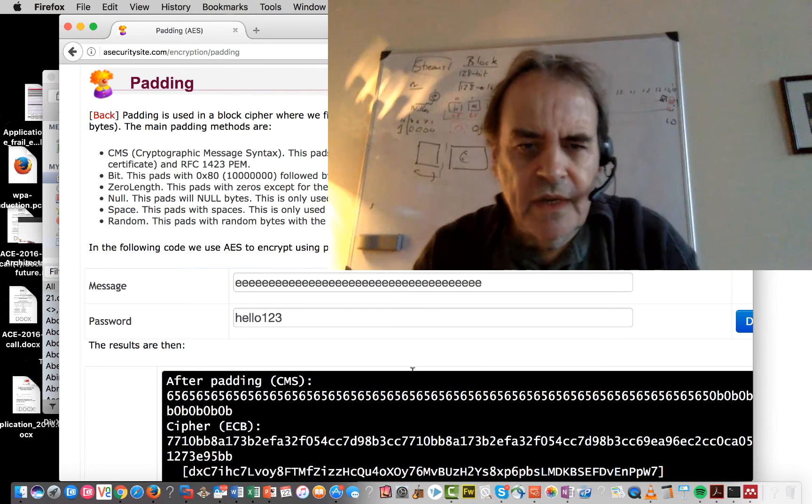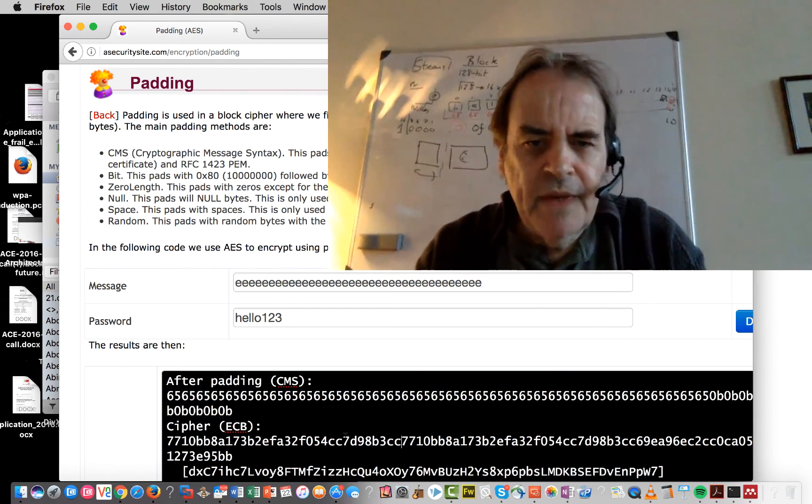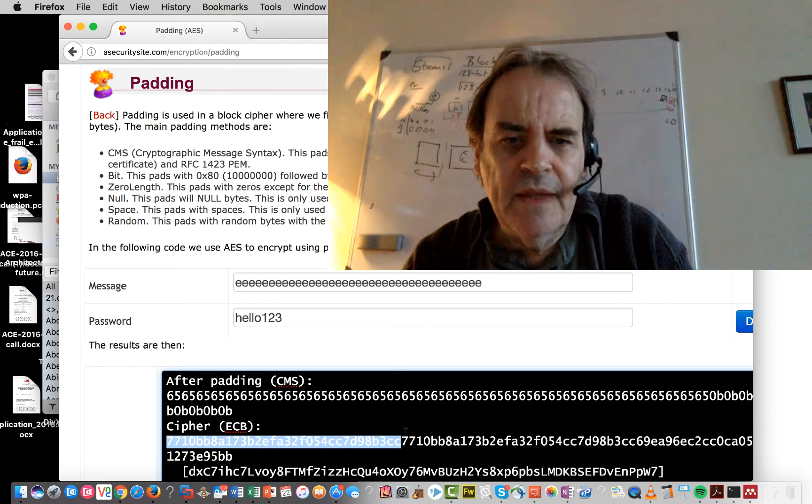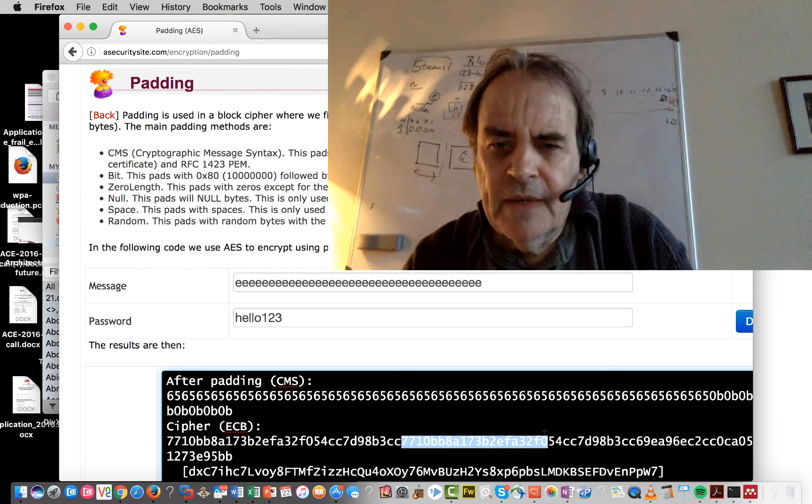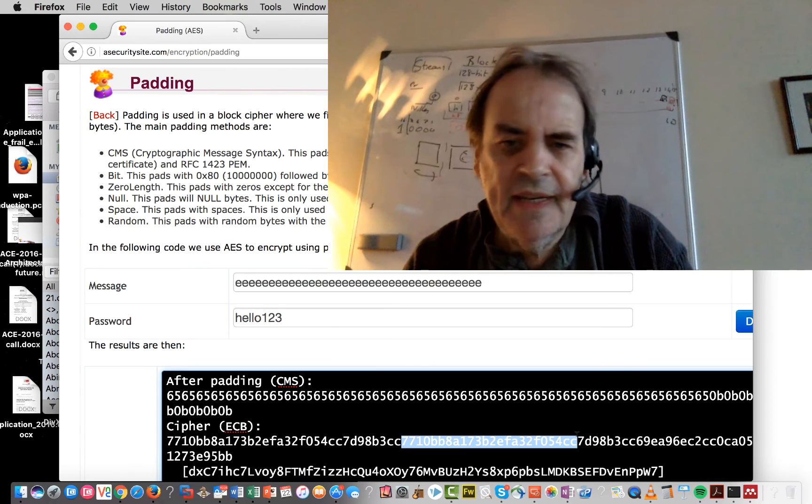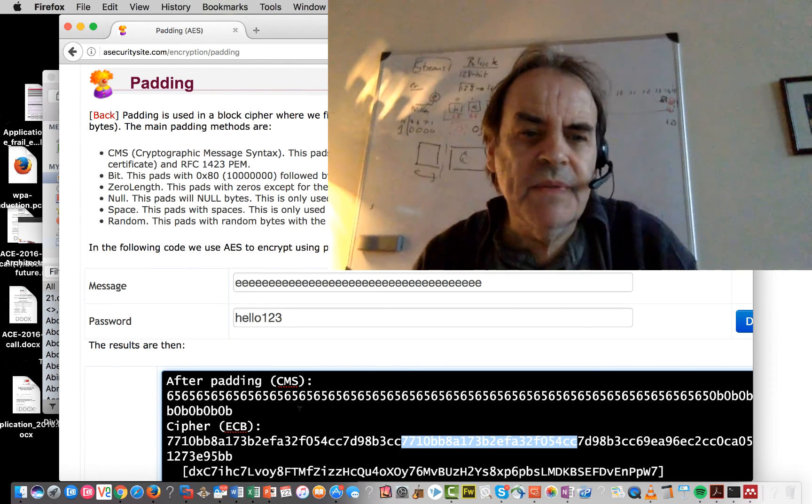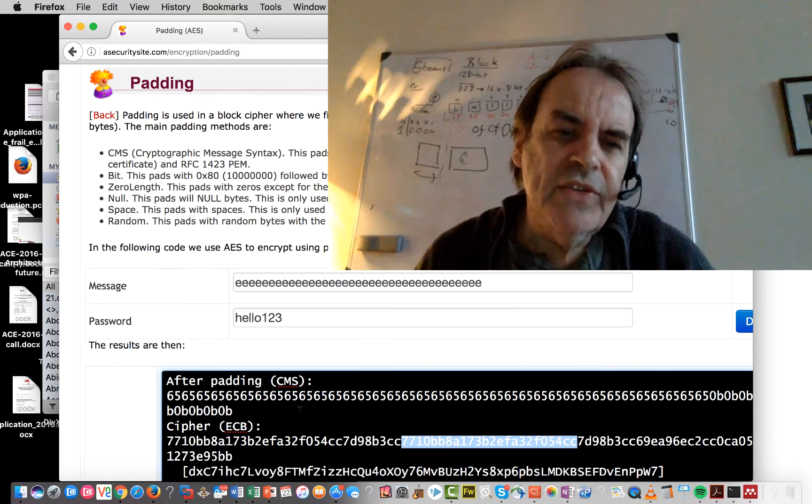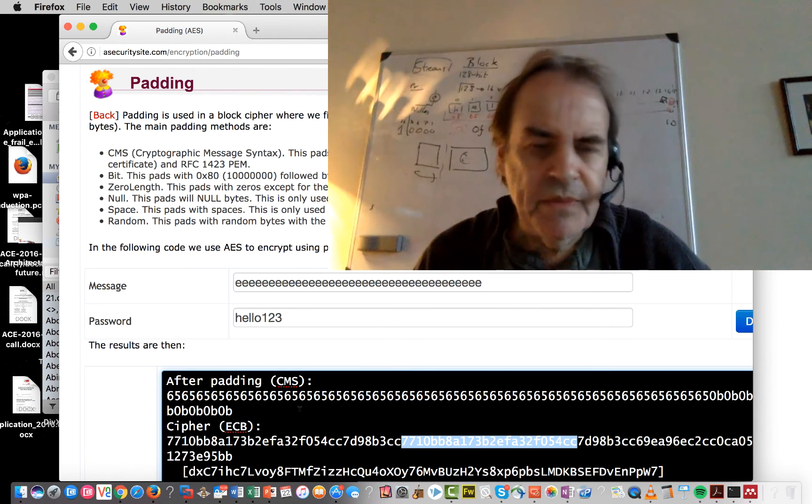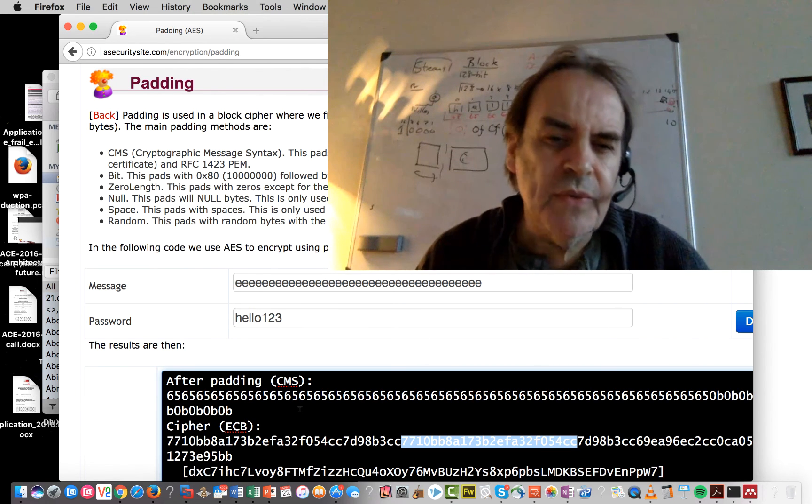So let's have a look at that. So there we go there. So there's one block and that block repeats. So there we go there and we have our second block which ends at CC and so on. So you can actually see that something like electronic codebook we can actually see repeated patterns coming out. So we would obviously use something like cipher block chaining to make sure that each of the blocks were different even though the content was coming in as the same.